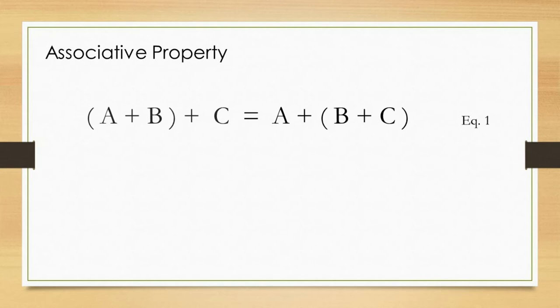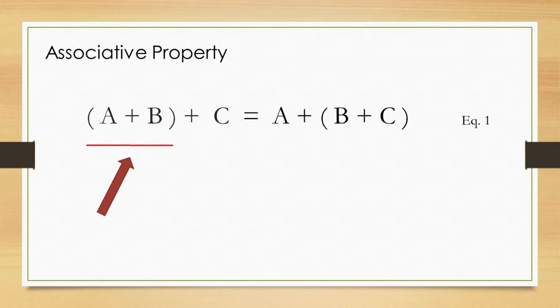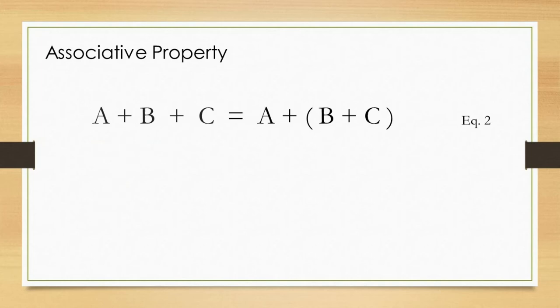The associative property in addition is often expressed in the following equation. Let us take this equation as equation 1. Let us focus on the left arm of the equation. The operation inside the bracket must be prioritized. However, since the bracket is located in the most left of the arm, the bracket can be eliminated, as it did not change the order of operation. Thus, the elimination of the bracket in the left arm gives us equation 2.